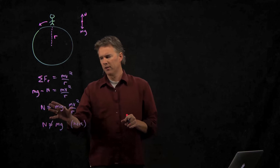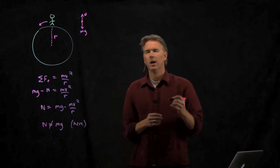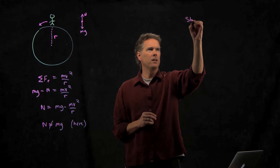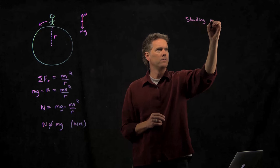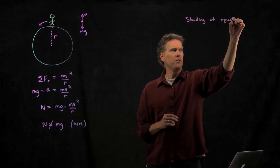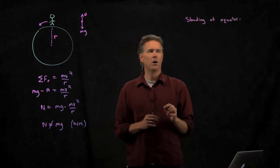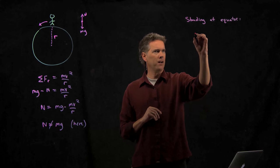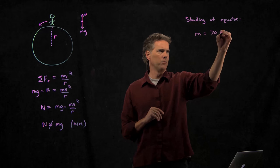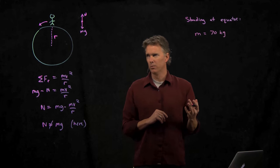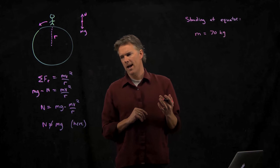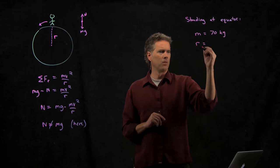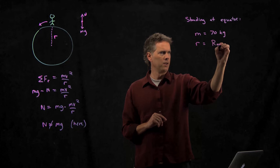So let's see if we can solve this for you guys right now. Let's make it a little more simple though. Let's say you're standing at the equator. And if you're standing at the equator, you are going around. You have some mass. Let's give you a mass. How about, I don't know, 70 kilograms. Typical mass of a human.